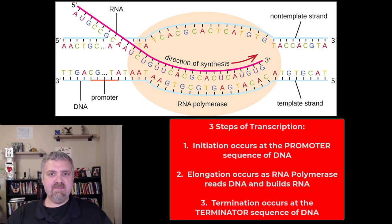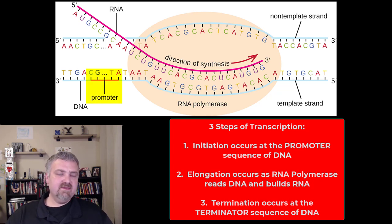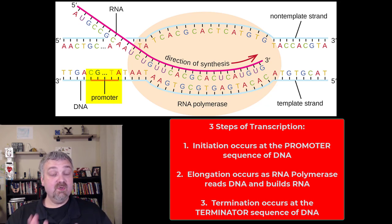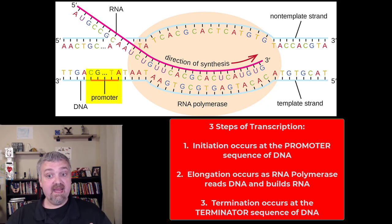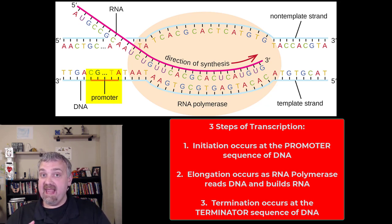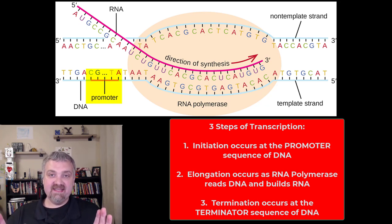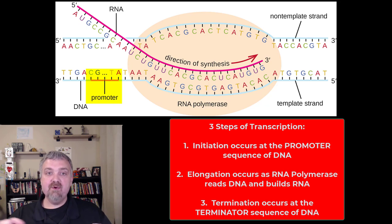So here we see the three steps: initiation, elongation, and termination. Initiation begins at the promoter sequence of DNA — it's a piece of DNA that says RNA polymerase start here, start reading DNA, start making a copy of RNA. Where you see a T, put an A. Where you see a G, put a C. Where you see an A, here's the key — put a U. Because RNA doesn't have thymine in it; it is replaced by its cousin, uracil. So the promoter sequence is where initiation occurs.